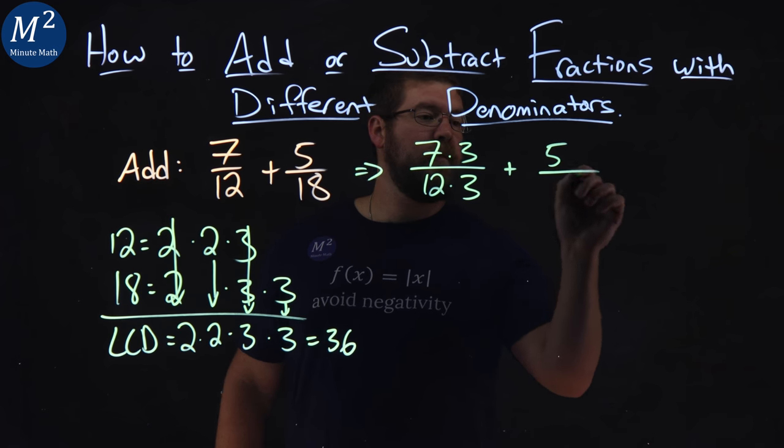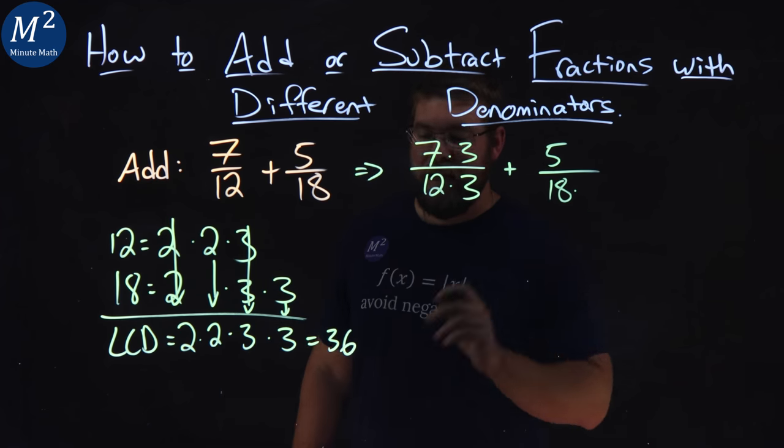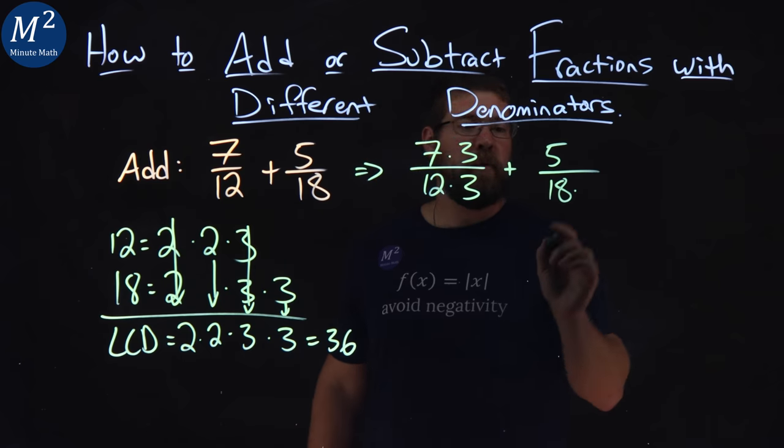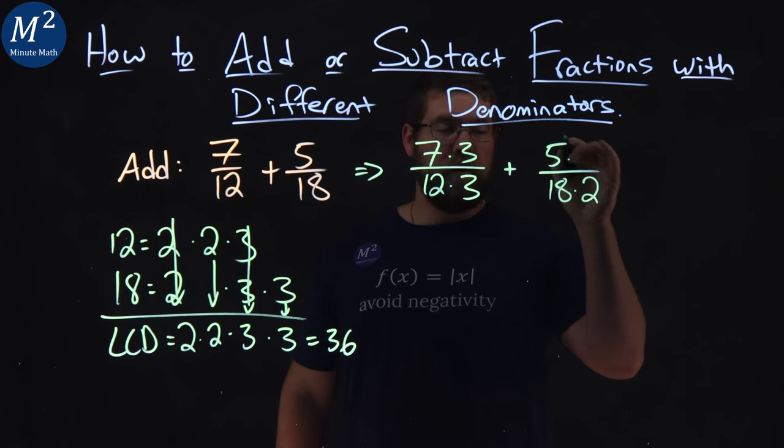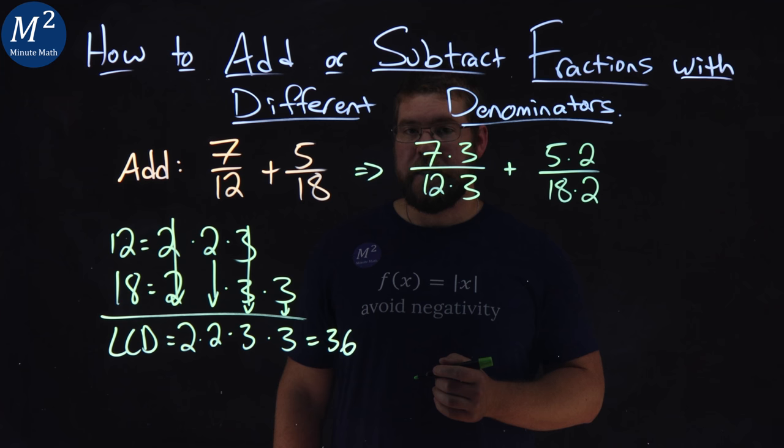Plus 5 eighteenths. To get 18 to be 36, we need to multiply that by 2, and 5, the numerator, do the same, multiply by 2.